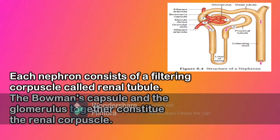The renal tubule continues further to form the proximal convoluted tubule, or PCT, followed by a loop of Henle that has a thin descending and a thick ascending limb. The ascending limb continues as the distal convoluted tubule, or DCT. The DCT of many nephrons opens into a straight tube called the collecting duct. The collecting duct runs through the medullary pyramids in the region of the pelvis. Several collecting ducts fuse to form a papillary duct that delivers urine into the calyces, which opens into the renal pelvis.